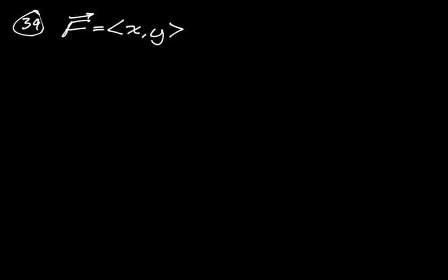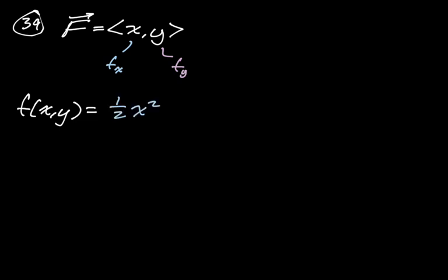Here we have f(x, y), so the first component is partial x and the second is partial y — we know the derivative with respect to x and the derivative with respect to y. One option is to integrate partial x with respect to x, which gives ½x². But if there was a function of only y, its derivative with respect to x would be zero, so we add a function of integration g₁(y). Going back, integrating partial y with respect to y gives ½y².